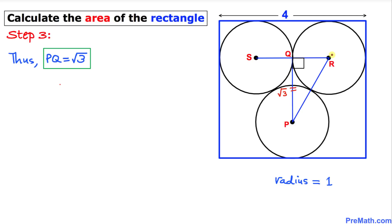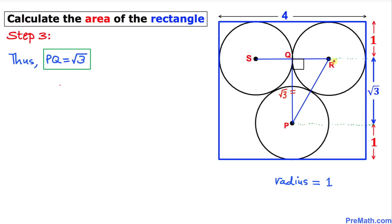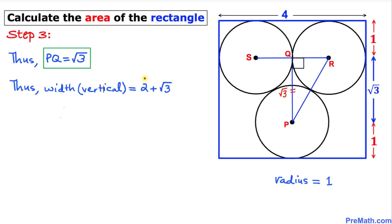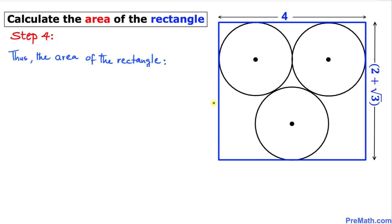Now let's draw the vertical radii of the circles. The vertical radius of the top circle is 1 unit, and the vertical radius of the bottom circle is also 1 unit. The total height of the rectangle is therefore 1 (top radius) + √3 (PQ) + 1 (bottom radius) = 2 + √3.